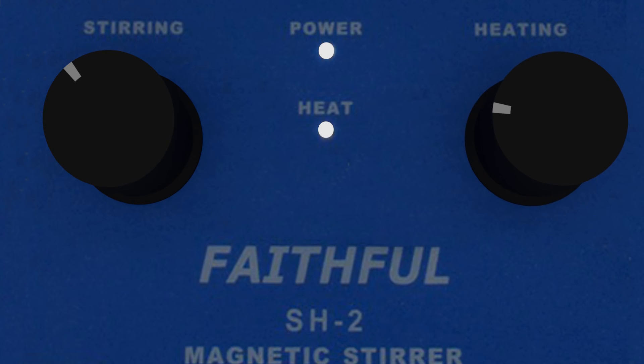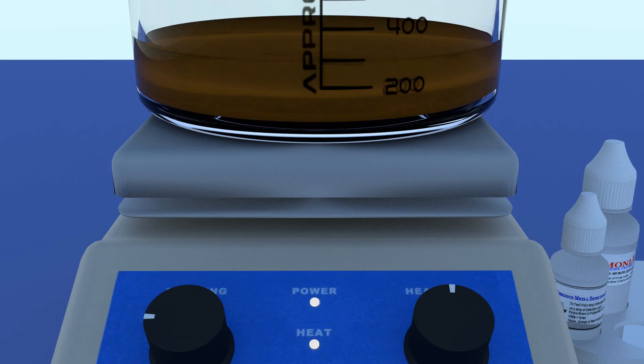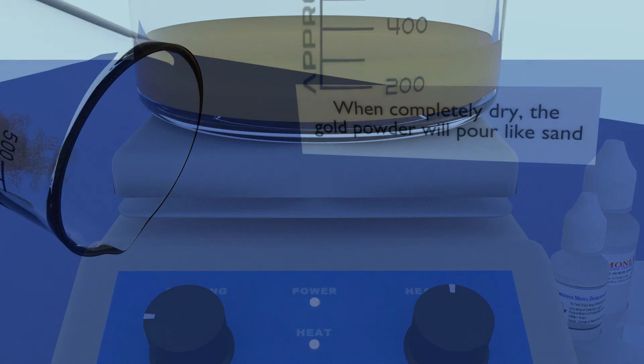To dry the gold mud, place the beaker on the hot plate and turn it on. Any distilled water overlaying and clinging to the gold mud will evaporate, leaving a dry brown gold powder that will pour out like sand.